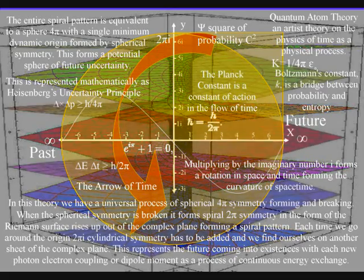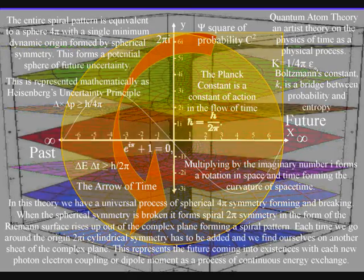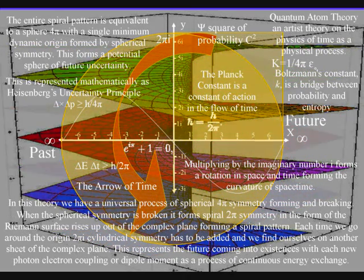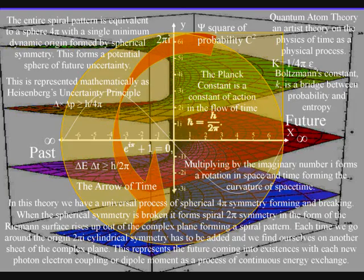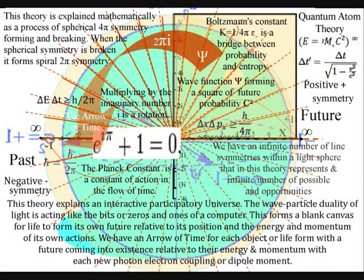At each rotation of the origin, two pi cylindrical symmetry has to be added and we find ourselves on another sheet of the complex plane. This spiral symmetry forms line symmetry representing the timeline or arrow of time.